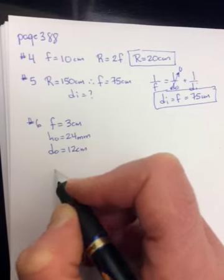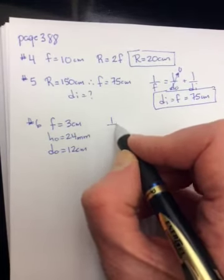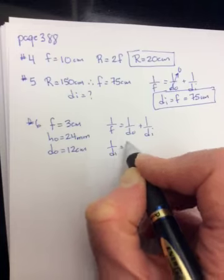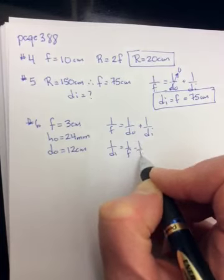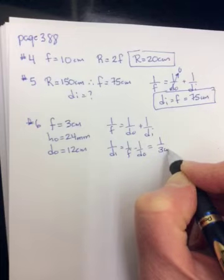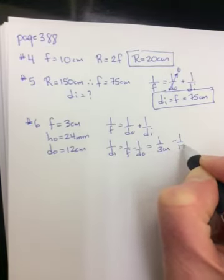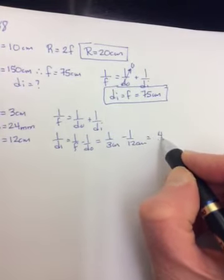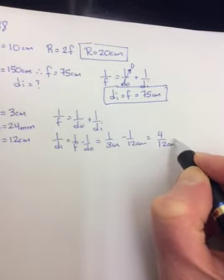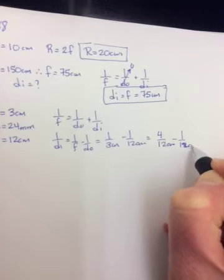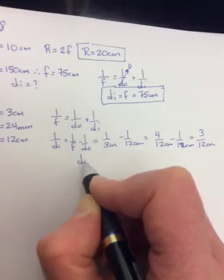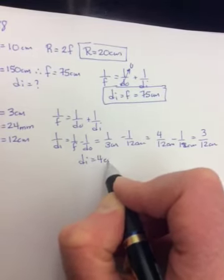Where will the image be formed? What's DI? So 1 over F is equal to 1 over DO plus 1 over DI. 1 over DI is equal to 1 over F minus 1 over DO. So 1 over 3 centimeters minus 1 over 12 centimeters. Common denominator is going to be 12. So 4 over 12 minus 1 over 12 should be 3 over 12, which becomes 1 over 4. So flip, DI equals 4 centimeters.